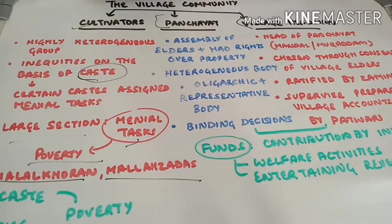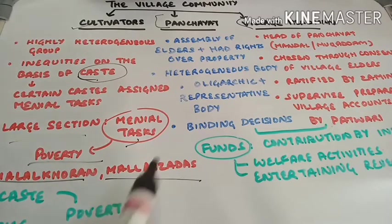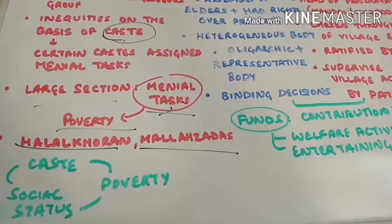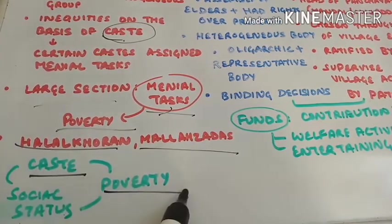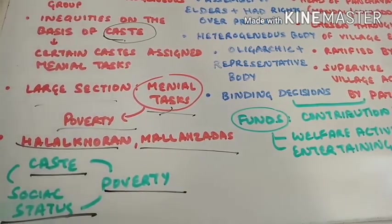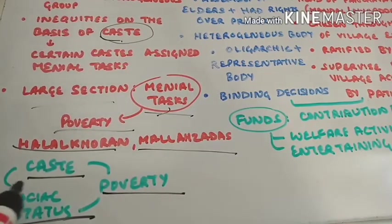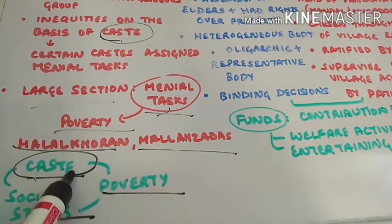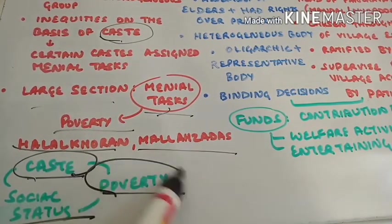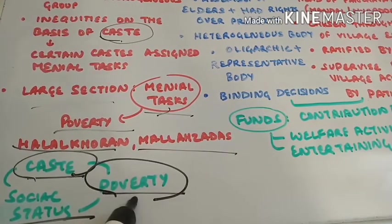People like these were treated like slaves. They were supposed to live outside the villages and were assigned menial tasks, that is tasks of very little or low value. In the rural society, there was a direct correlation between caste, poverty, and social status. People who belonged to the lower castes were given menial tasks, because of which they remained poor, and because of this they had very little social respect.